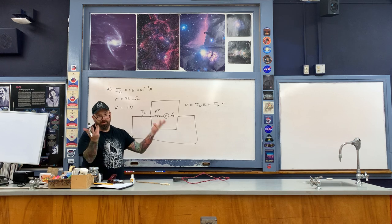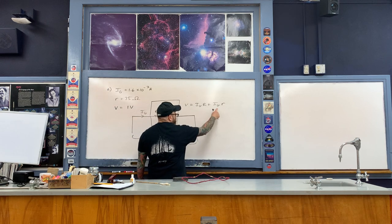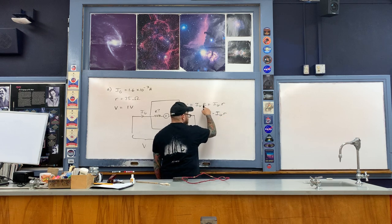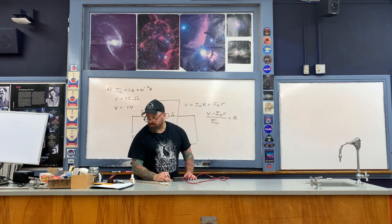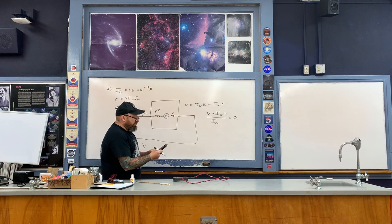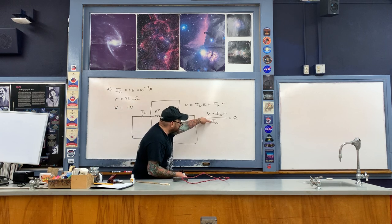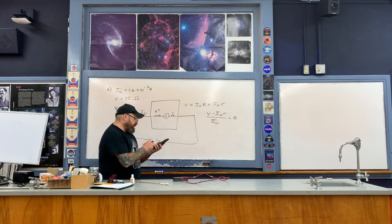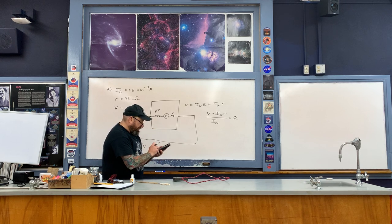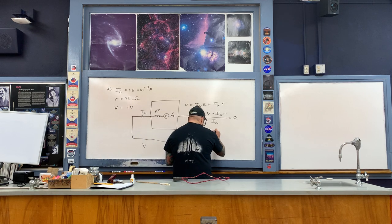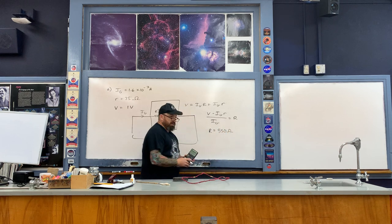Now all we do is solve for capital R. Moving the small r term to the other side and dividing by I sub G gives us the auxiliary resistance capital R. Plugging in: one volt minus the product of 1.6 times 10 to the minus 3 amps and 75 ohms, all divided by 1.6 times 10 to the minus 3 amps. The result is quite large — it comes out to be 550 ohms. And the reason it's large is because the full scale deflection current is very small.